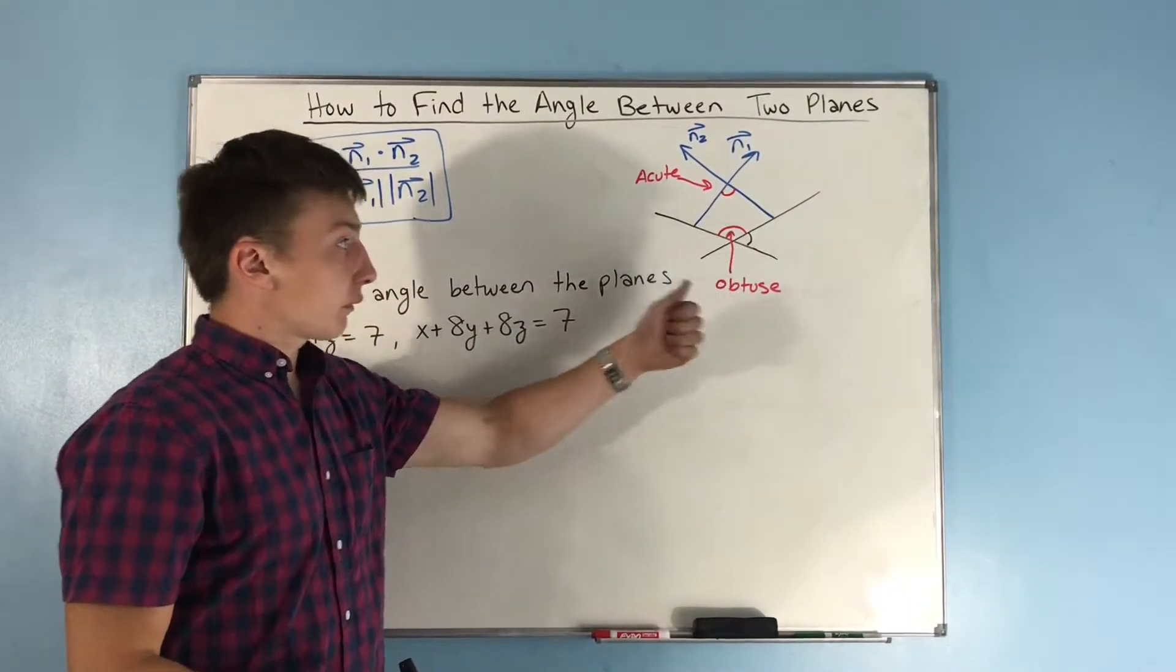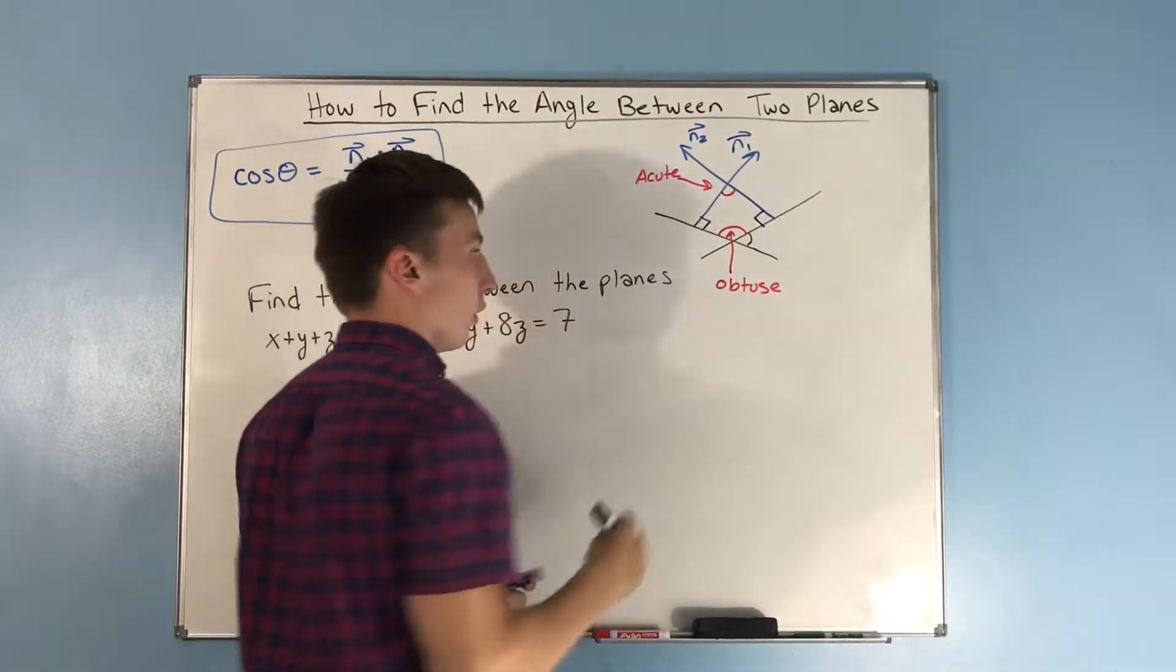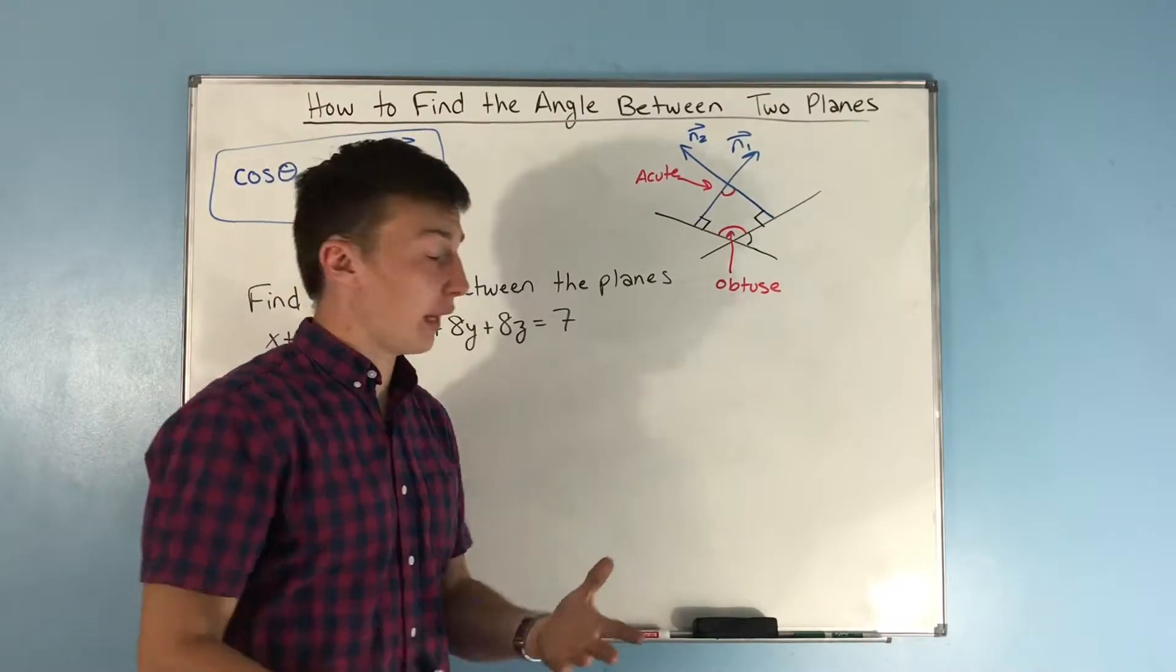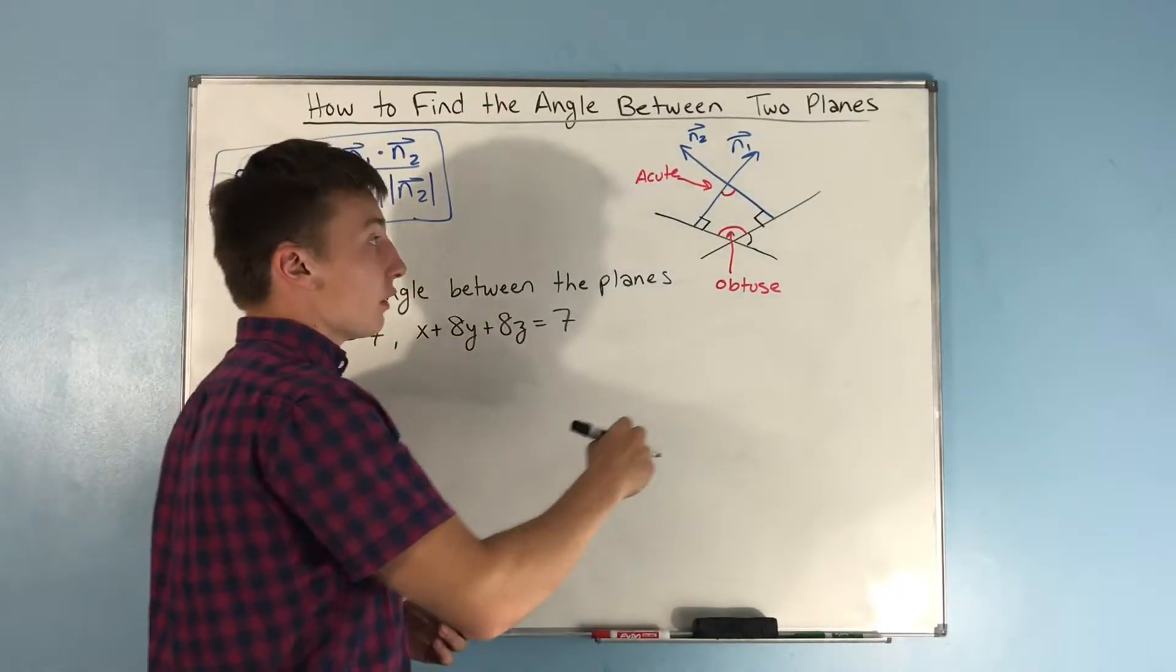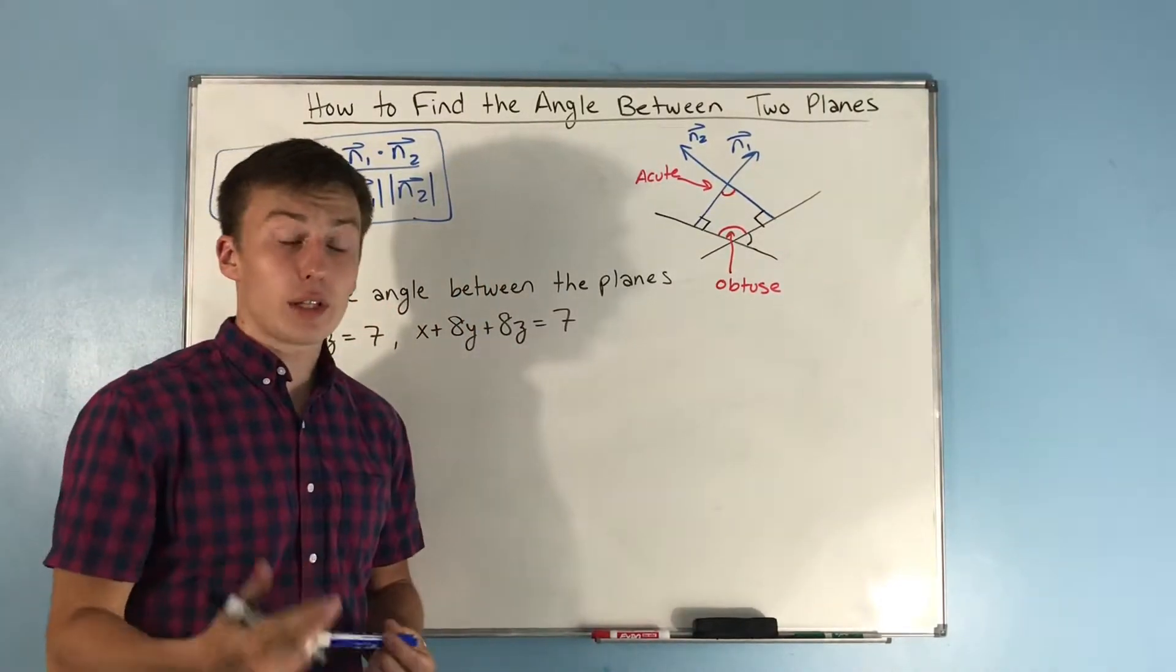And, well, if you think about it, the normal vectors are at right angles. They're at right angles to the plane. That makes sense, we know that. And what we formed right here, that's a quadrilateral.